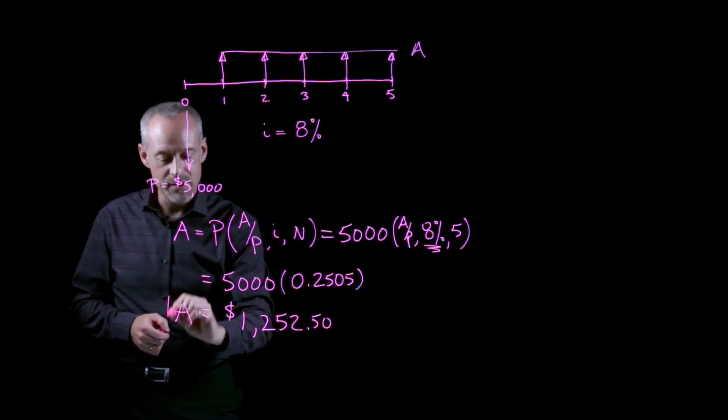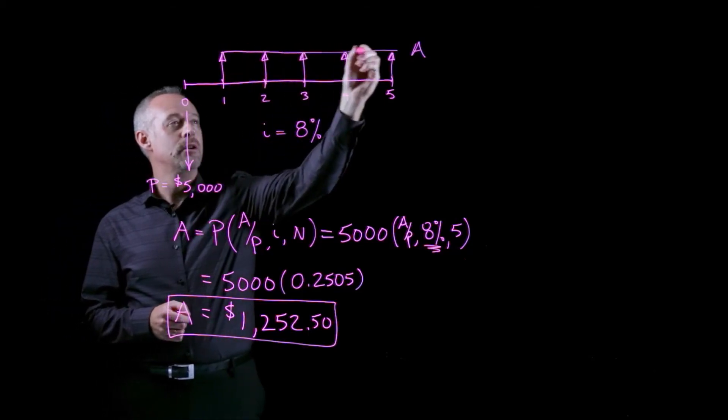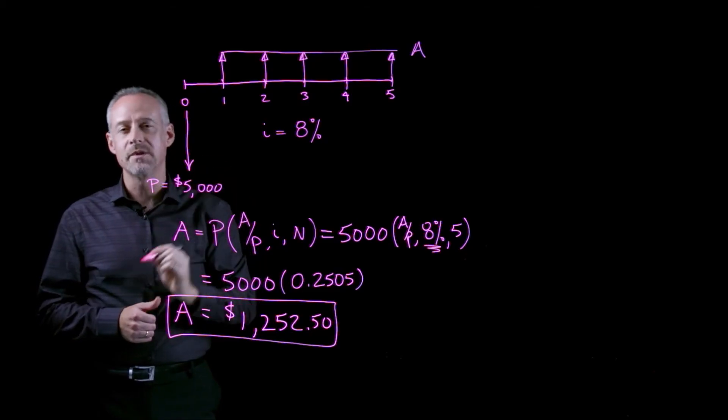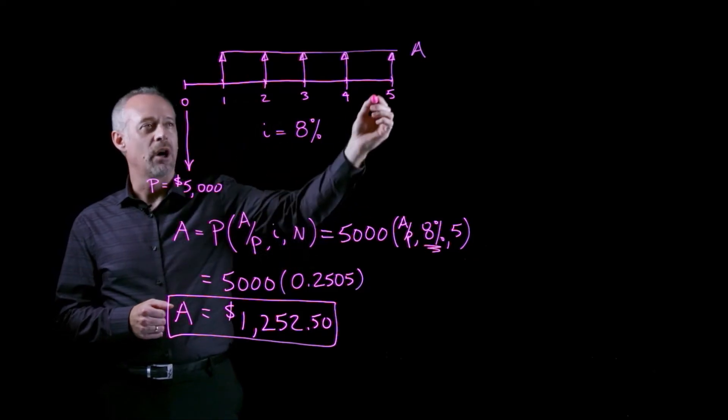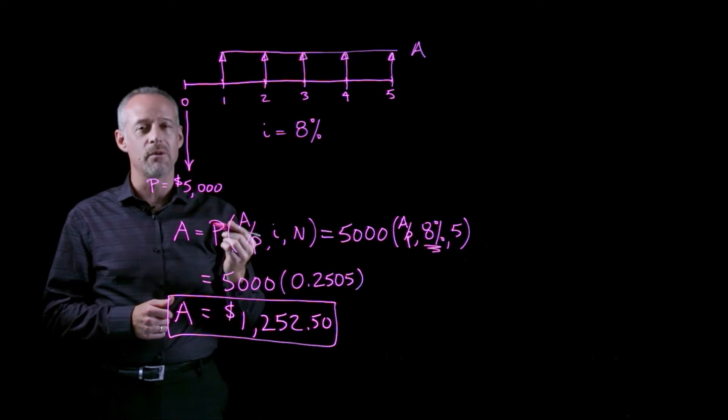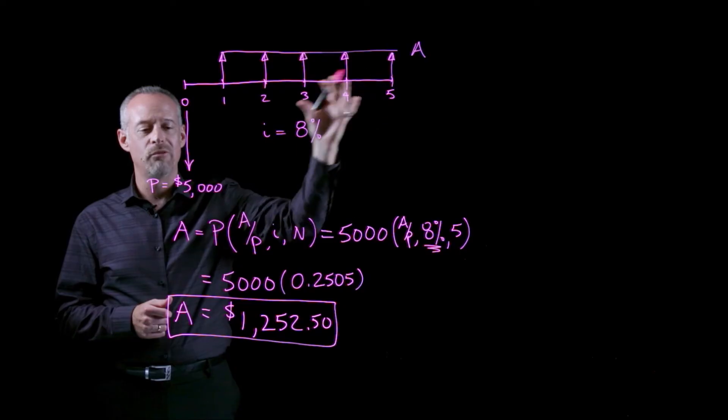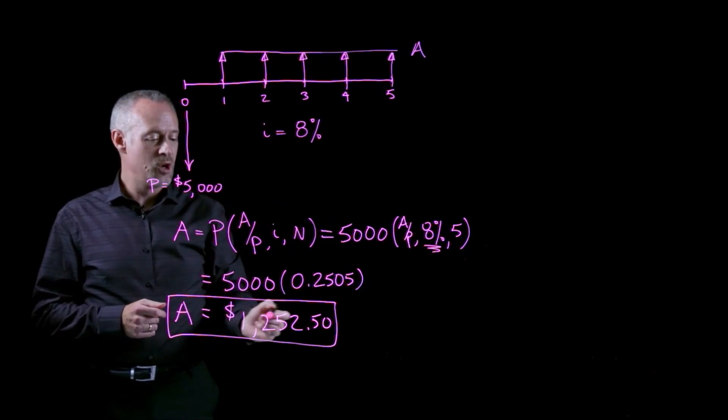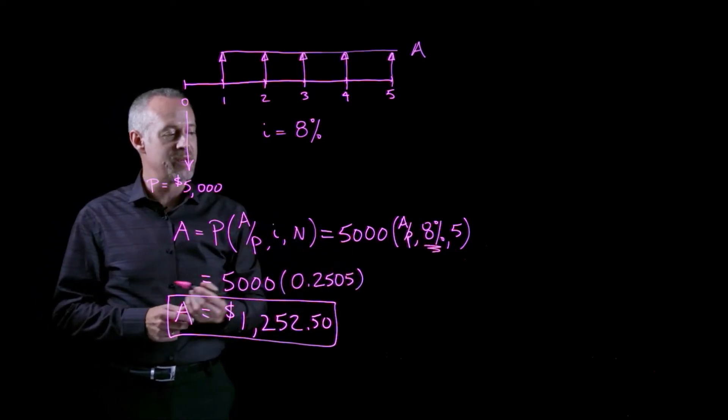So this is the value of the savings that have to occur each year in order for this investment to completely pay for itself. And this is really based around the idea of equivalence. So what we've done is essentially figure out what are the five equal payments over five years that are equivalent to an initial investment amount of $5,000.